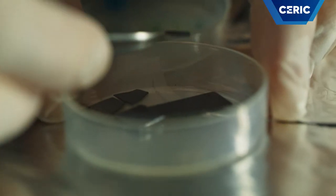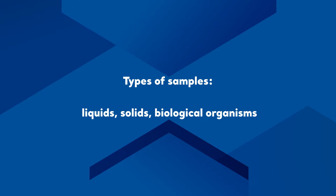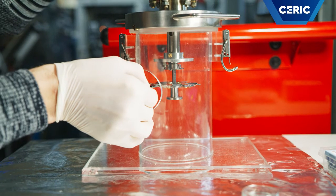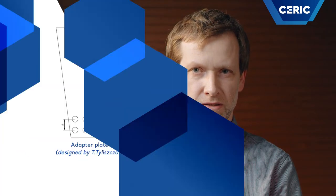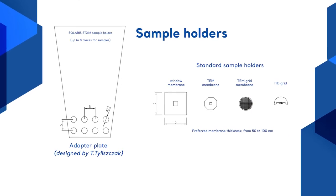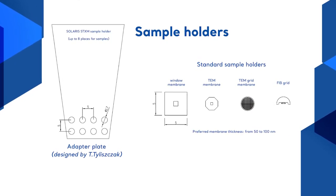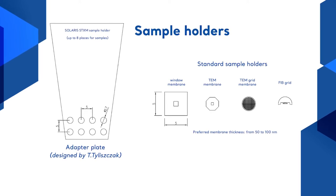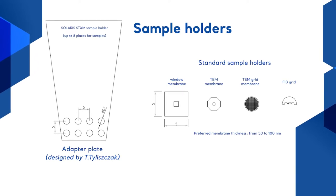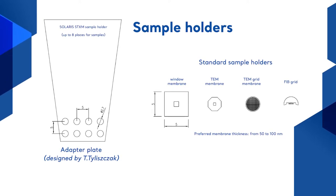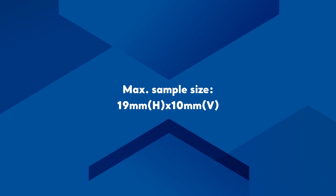A wide variety of samples can be tested in STXM: liquids, solids, biological organisms. The UHV standard is acceptable but not required. The sample should be sufficiently thin to allow minimum 5% transmission for X-rays in the required energy range. The standard frame size is 5 by 5 mm square or diameter equals 5 mm. Minimum frame size is 2.5 by 2.5 mm or diameter equals 3 mm. Maximum sample size is limited up to 19 mm by 10 mm.